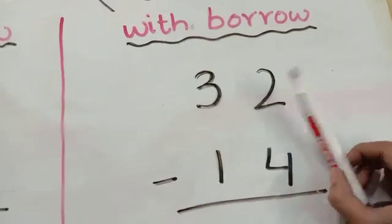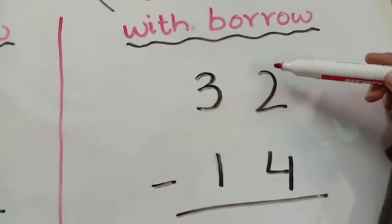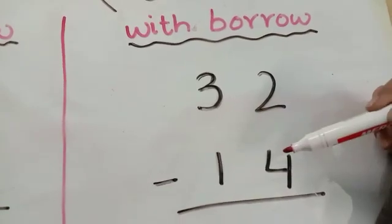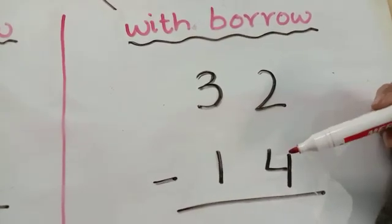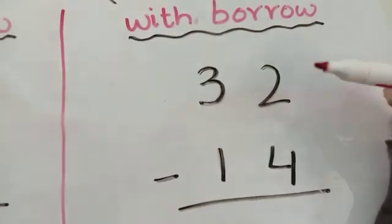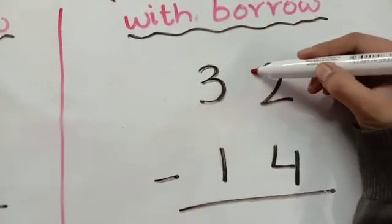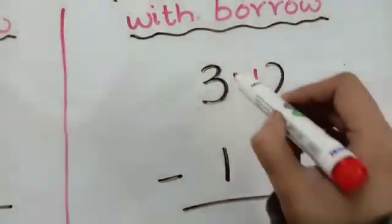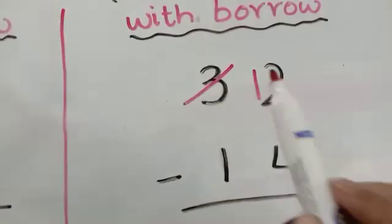From your right side. Now, we have to see here. That 2 is small. We have to minus 4. How do we minus 4?